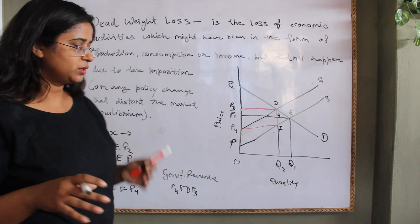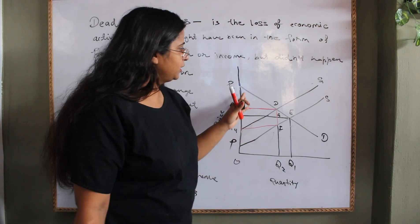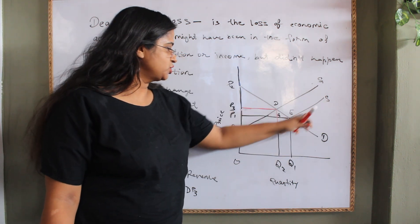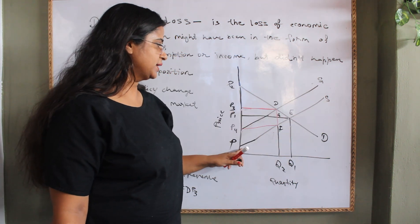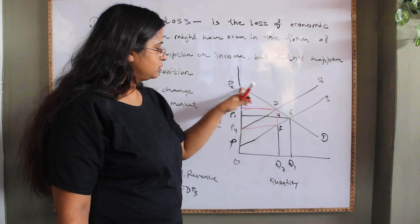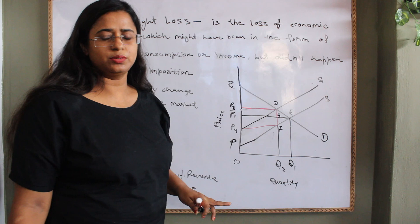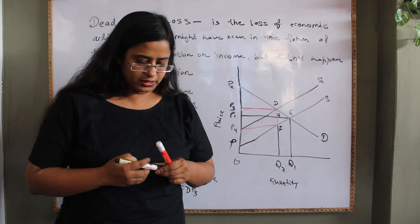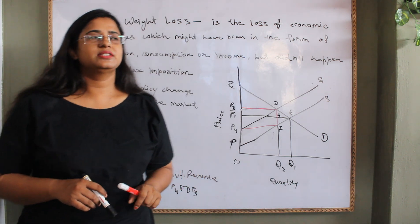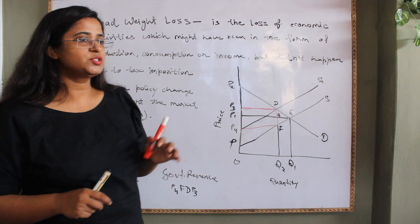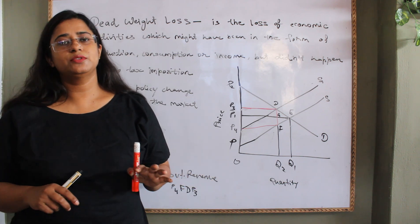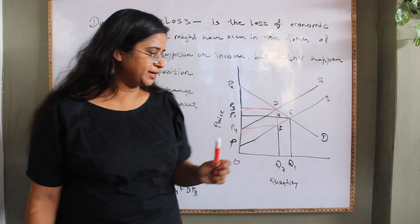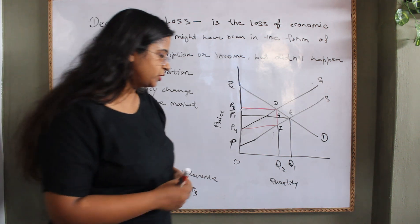You will see it more clearly. Here you can see a demand function P2D and the original supply function PS. This is demand and this is the original supply function. But suppose if the government imposes tax. I am taking the example of taxation and how it distorts the market, how it reduces the welfare of the society. If tax is imposed on some particular commodity, maybe some commodity X.